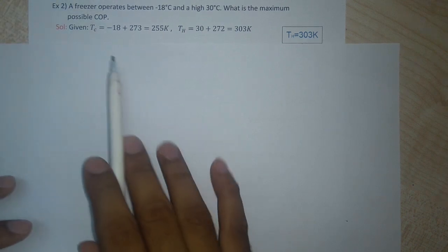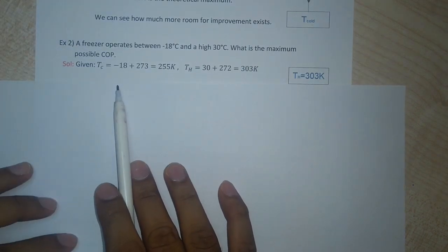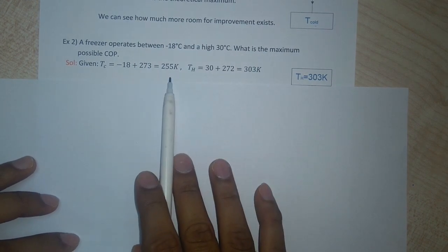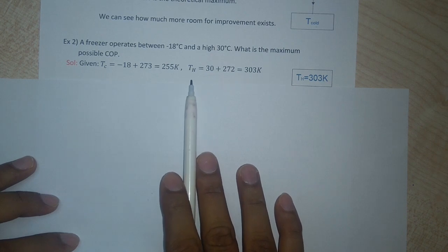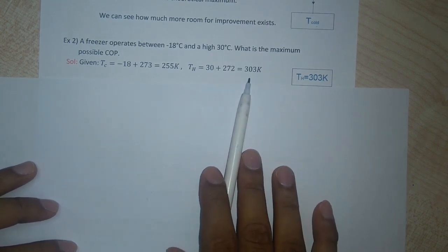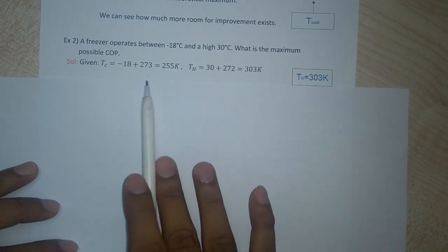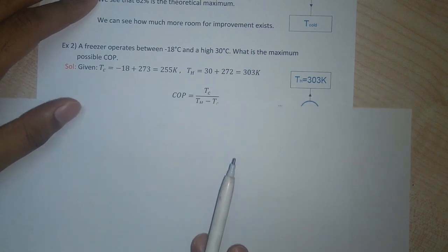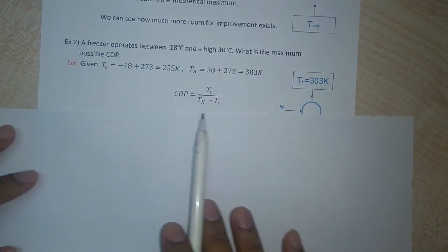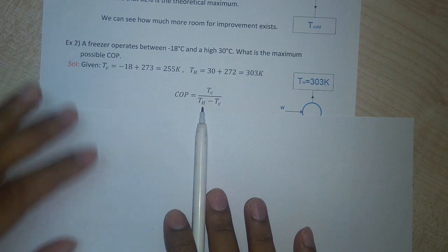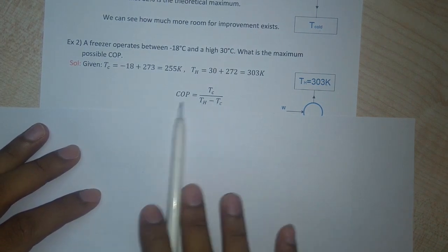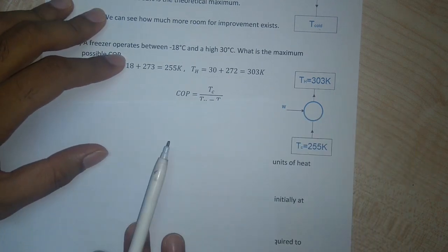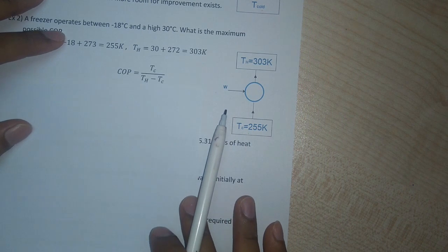What is given to us is the lower temperature, that is the temperature of the freezer, which is 255 Kelvin, and the temperature of the hot reservoir which is 303 Kelvin. Remember to convert whatever temperatures are given into the Kelvin scale. The formula for COP, the coefficient of performance, is given as TC divided by TH minus TC.